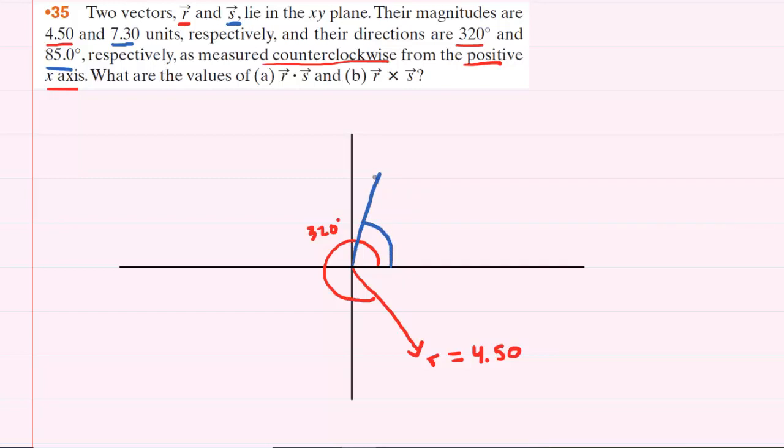This would be vector s. So far so good. Now for part a we have to find the dot product between these two vectors.